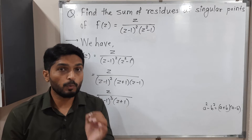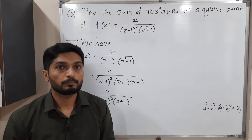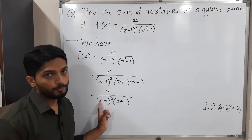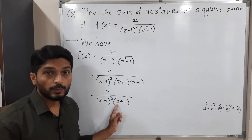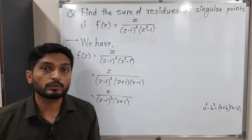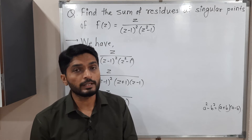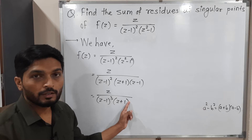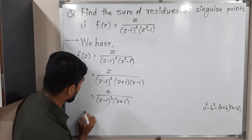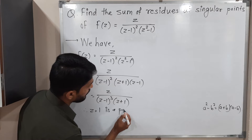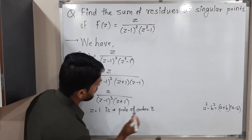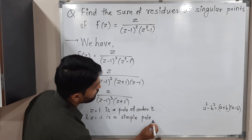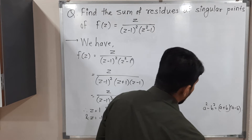After that we have to find singular points — the points where the function is not analytic. Simply put, wherever the denominator becomes zero is a singular point. If we put z = 1, the denominator is zero; if we put z = -1, then (-1+1) = 0. So z = 1 and z = -1 are singular points, also called poles. z = 1 is a pole of order three and z = -1 is a simple pole, meaning a pole of order one.